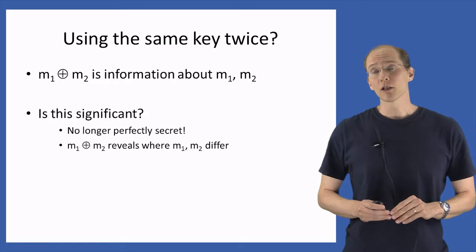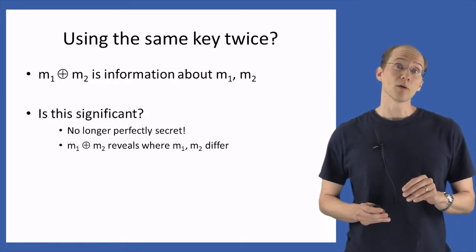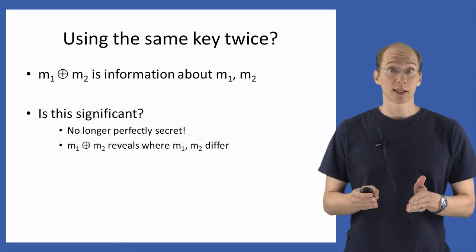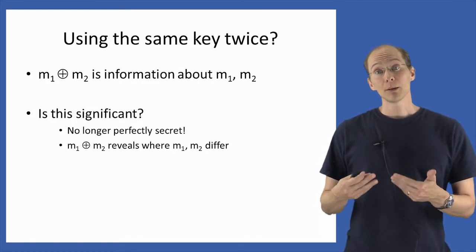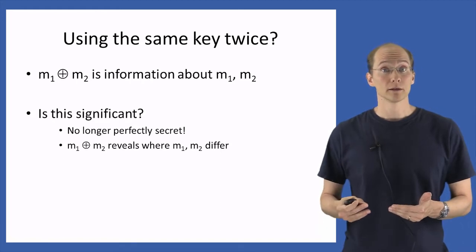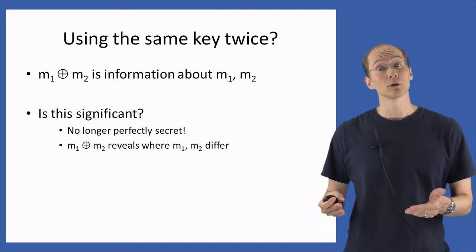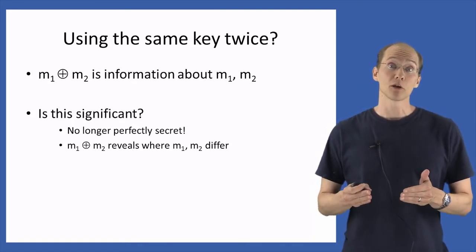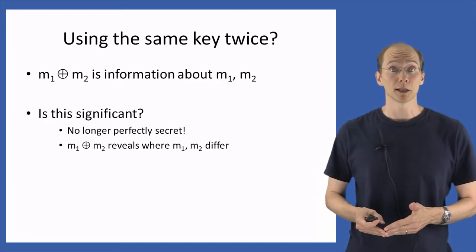Let me give a couple of examples. First of all, the XOR of M1 and M2 reveals exactly where the messages M1 and M2 differ. On any positions where M1 and M2 are the same, their XOR will be 0. And on any positions where M1 and M2 differ, their XOR will be 1. So the XOR of C1 and C2, which equals the XOR of M1 and M2, reveals to the attacker precisely those positions where M1 and M2 differ, and that can be a significant piece of information.